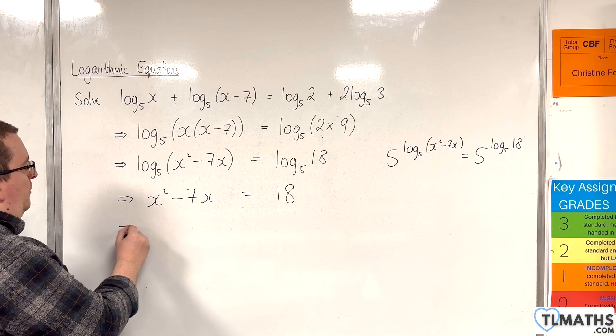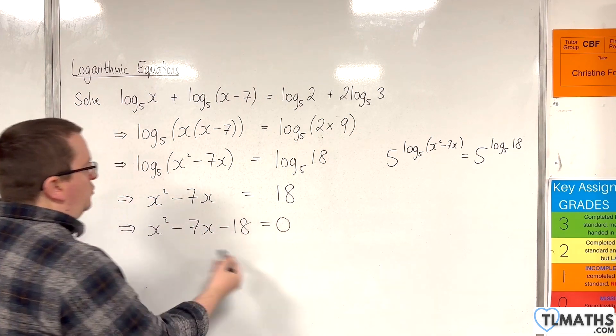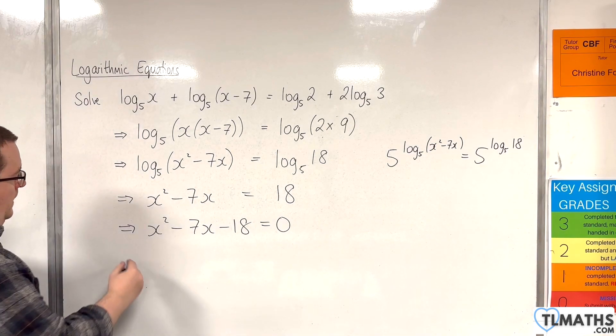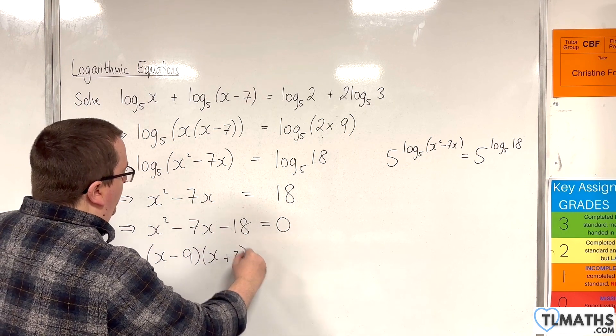So now I can subtract 18 from both sides. And we have a quadratic to solve. Now that factorizes to (x - 9)(x + 2) = 0.